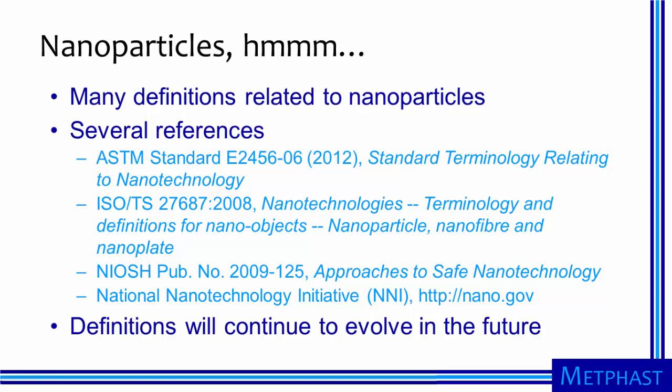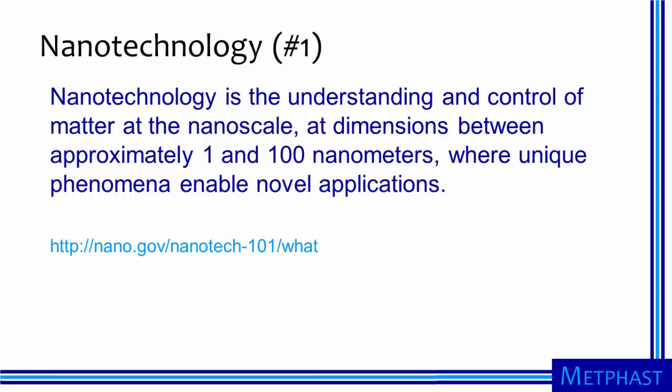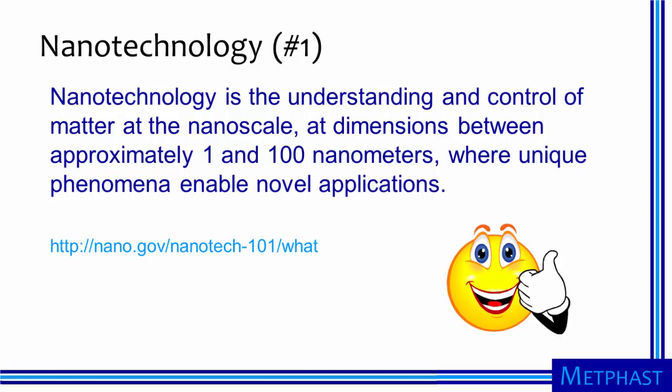As nanotechnology is still an emerging field, we should expect that our definitions will continue to evolve to some extent into the future. Looking at some of the definitions we have already, a definition for nanotechnology from the NNI is that it is the understanding and control of matter at the nanoscale, at dimensions between approximately 1 and 100 nanometers, where unique phenomena enable novel applications. That seems like a pretty simple definition that gets us into the 1 to 100 nanometer range, which is the same range covered by Pryning's definition of ultrafine particles.